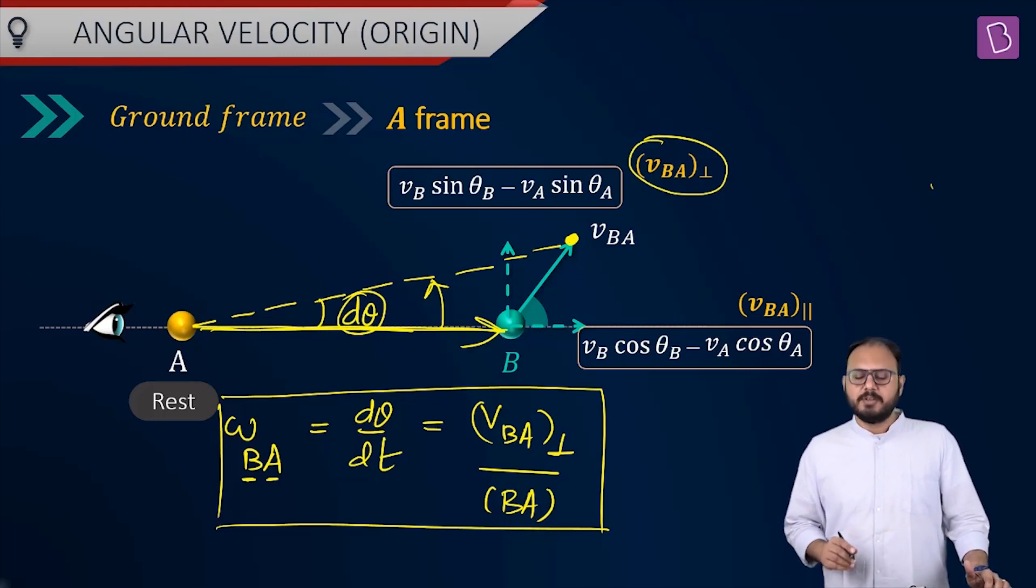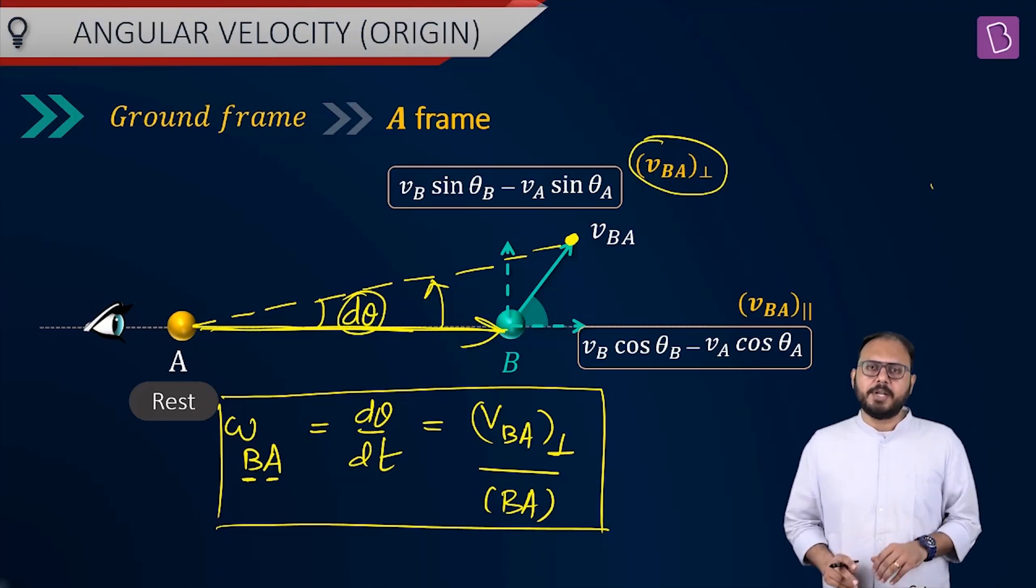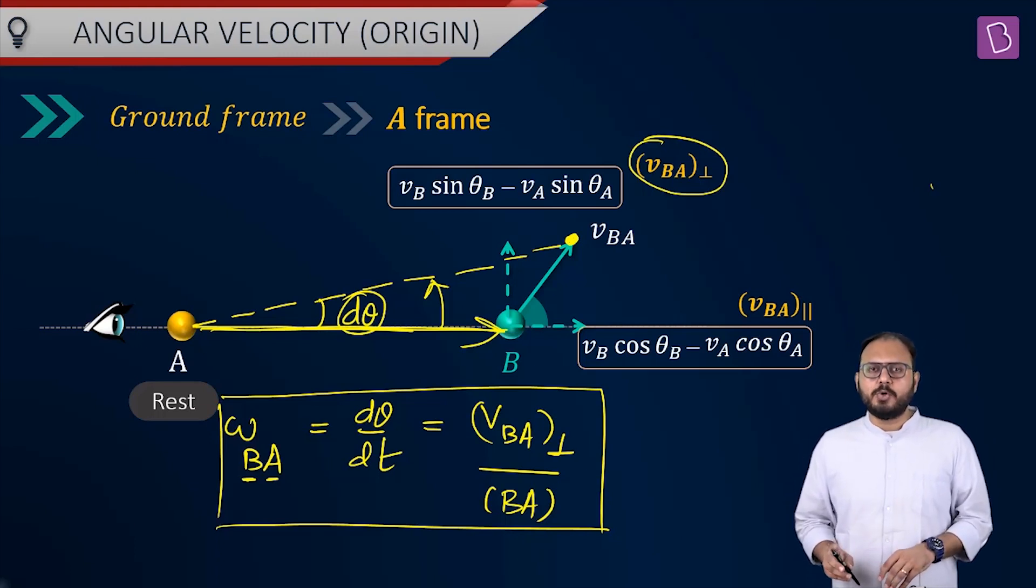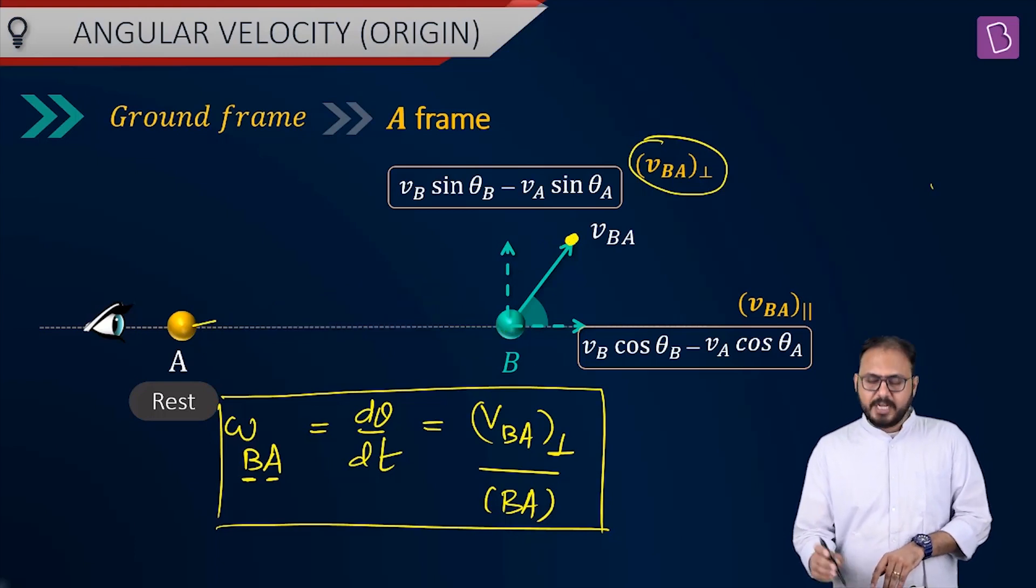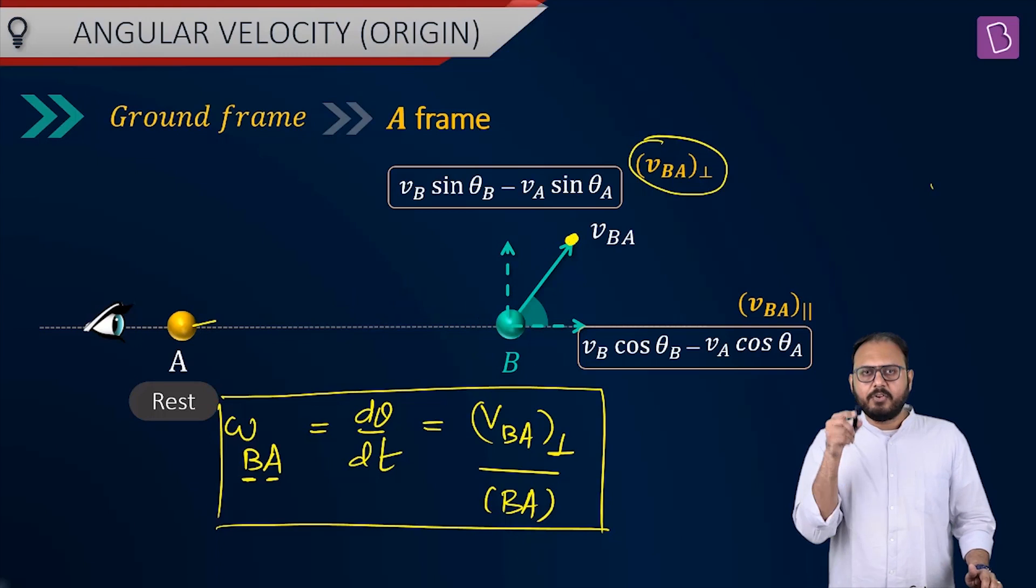So guys, there are two components. VBA parallel, VBA perpendicular. What does VBA parallel do? It increases distance. What does VBA perpendicular do? It changes the angle. And that rate of change in angle is called angular velocity.